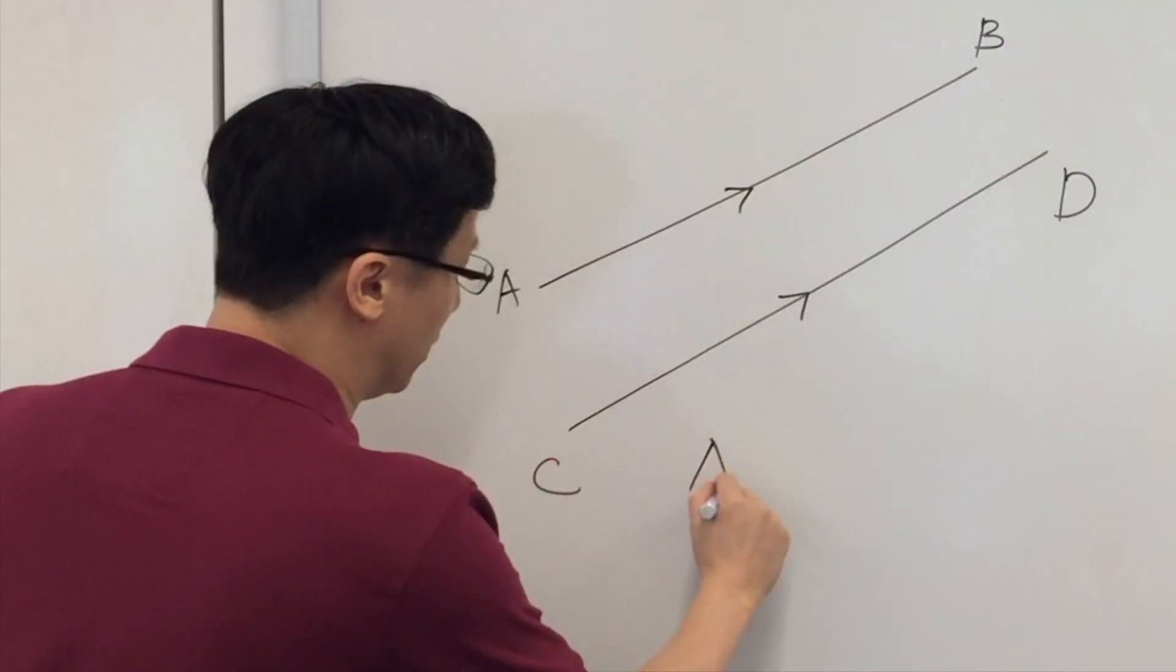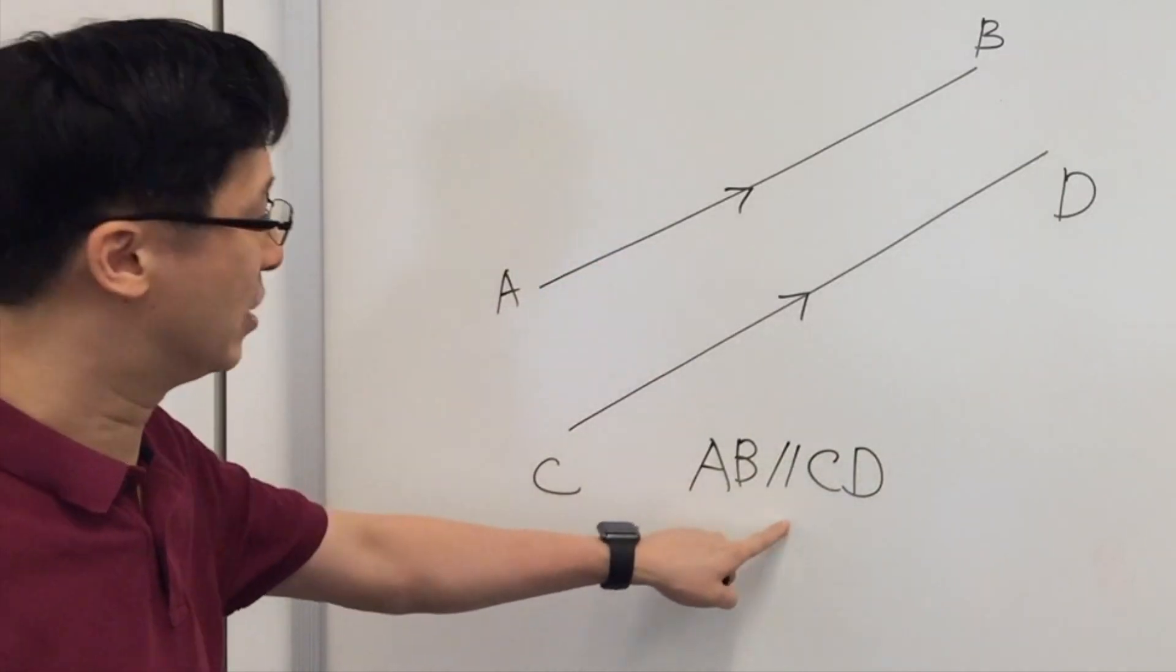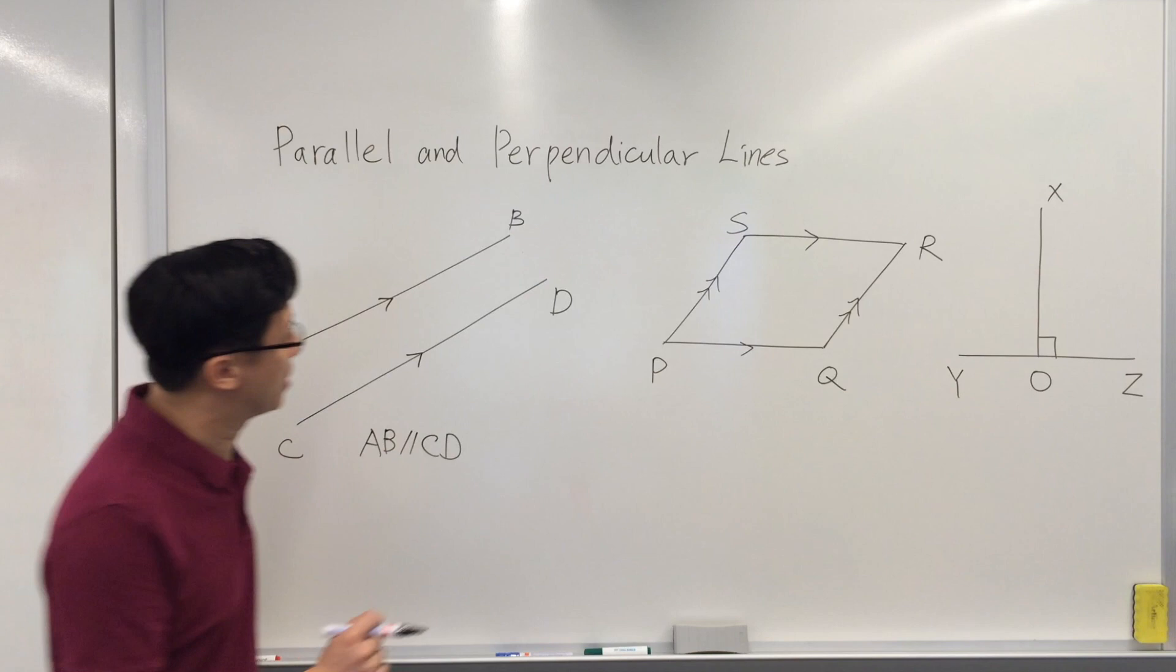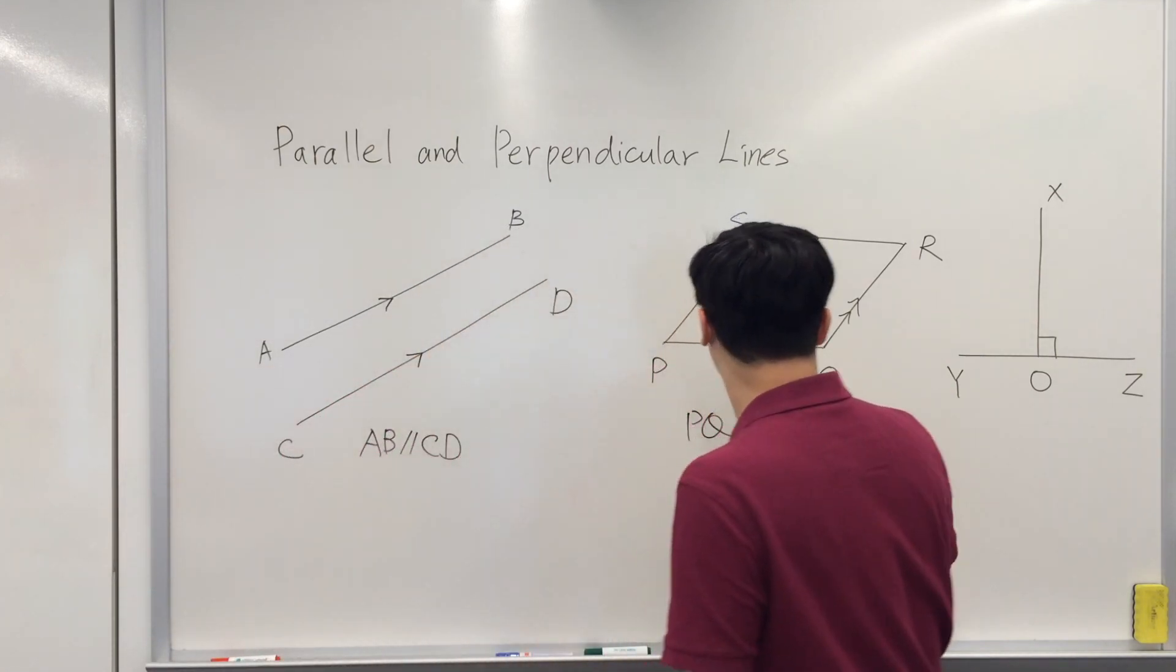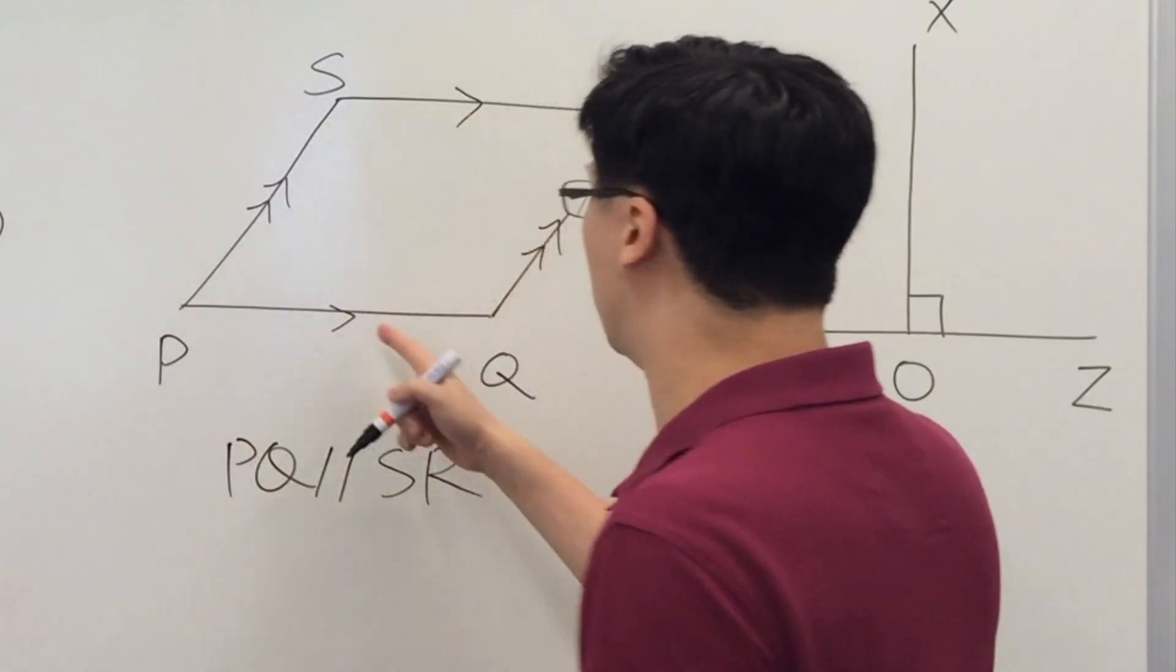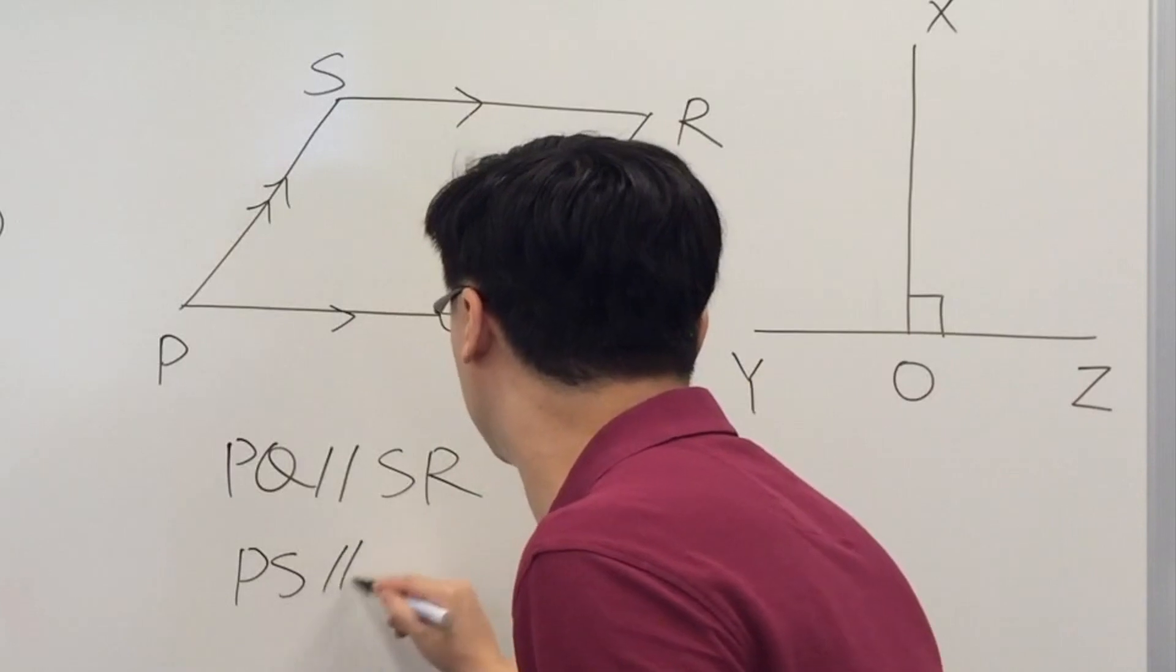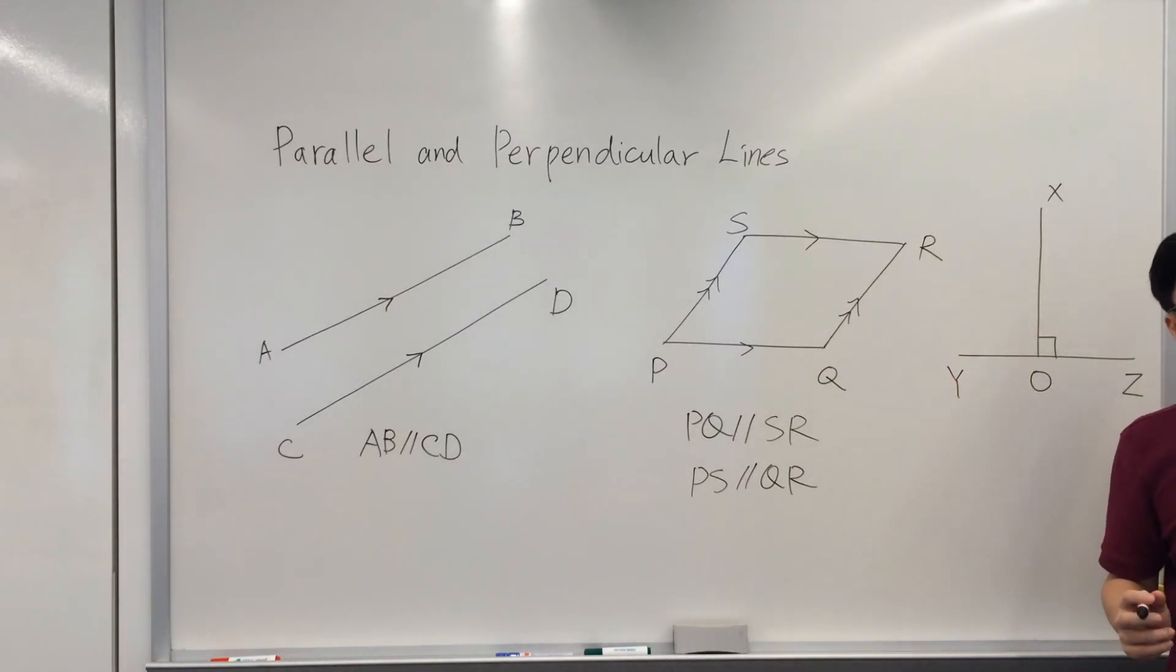We can write in this way: for the first one, AB parallel to CD, just write two slashes to represent parallel. And then PQ parallel to SR and PS parallel to QR, so this is a parallelogram.